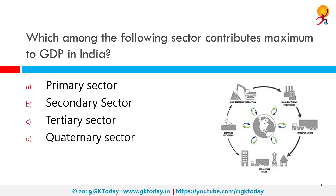Which among the following sectors contributes maximum to GDP in India? The correct answer is the tertiary sector. The tertiary sector, or service sector, is the third of the three economic sectors in the three-sector theory; the others are the secondary sector and the primary sector. The service sector consists of the production of services instead of end products.